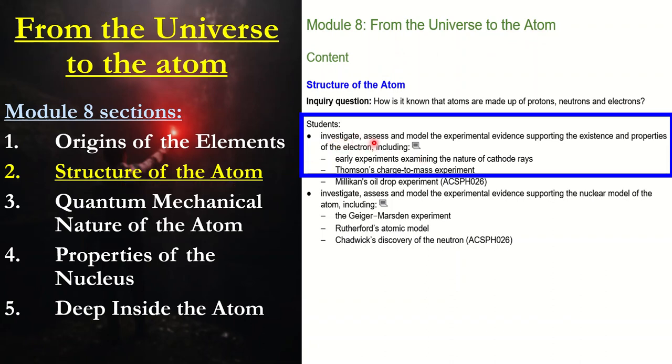What we're going to investigate is the models supporting the existence of electrons and looking at certain properties by investigating some early experiments into cathode rays, also known as electrons, and we're also going to look at Thomson's charge-to-mass experiment. If this does go over about 20 minutes, we will split this up into two sections, two videos for each dot point.